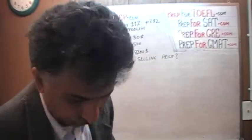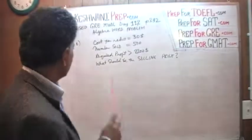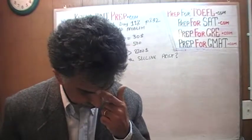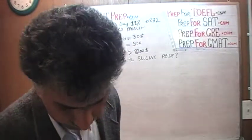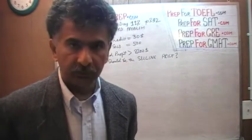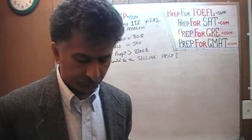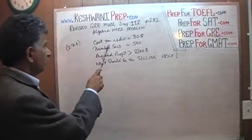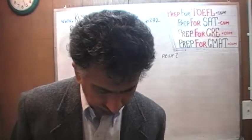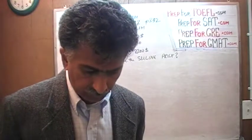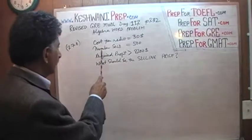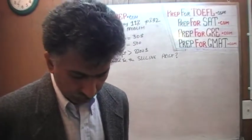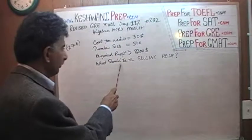The problem at the top of the page is about radios — problem number 2.7.6. It says: to produce a particular radio model, it costs a manufacturer $30 per radio. Turn to page 232 and read the problem with me. Cost per radio is $30. They go on to say that 500 radios are produced and all of them are sold — number sold is 500. What must be the selling price?